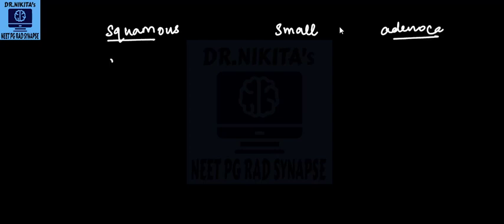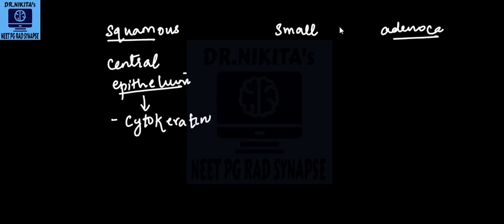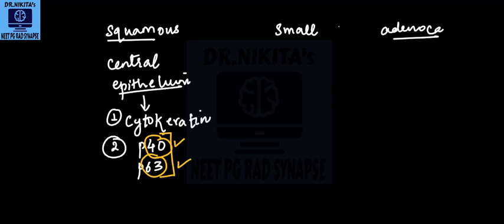So squamous cell carcinoma, we know that it's generally a central carcinoma. It arises from the epithelium, the bronchial epithelium, the central ones. So we know that in such tumors, which comes from the epithelium, the marker is cytokeratin. That is why in squamous cell carcinoma, we will see cytokeratin. Now the other marker in squamous cell carcinoma is your P40 and P63. So to remember this, remember that squamous cell carcinoma comes in generally in the older age groups. So 40 and 63, like 40 years and 63 years, this is when you see the squamous cell carcinoma. So that helps you to remember the markers for squamous cell carcinoma.